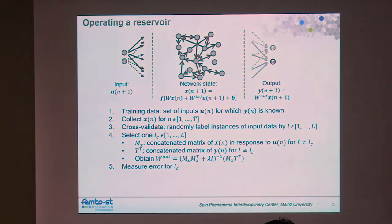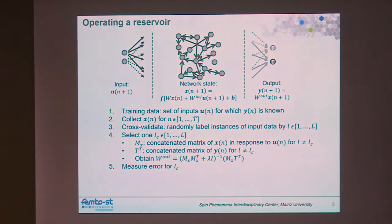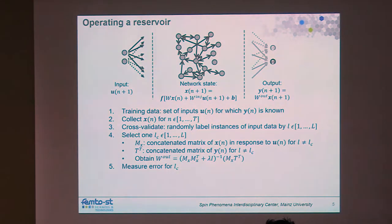The training data consists of input sequences with temporal context, such as a time series to predict or spoken digits. For MNIST-style object recognition without memory requirements, the approach also works but the need for memory depends on the task. You inject all training inputs into the system and collect the reservoir states for all input examples, building a large state-collect matrix where each row corresponds to one input instance.